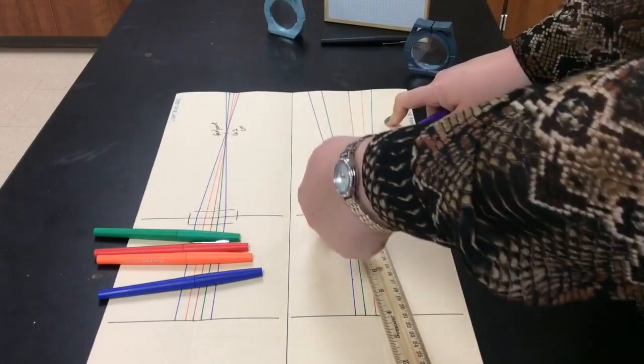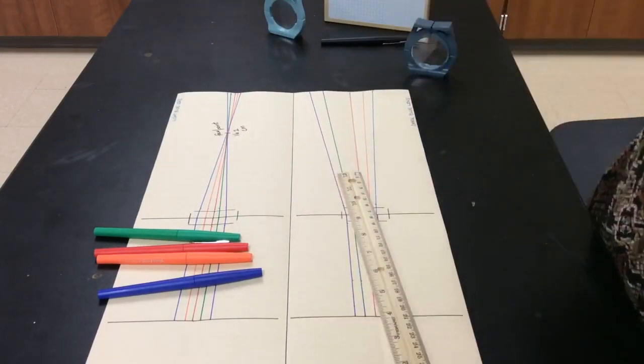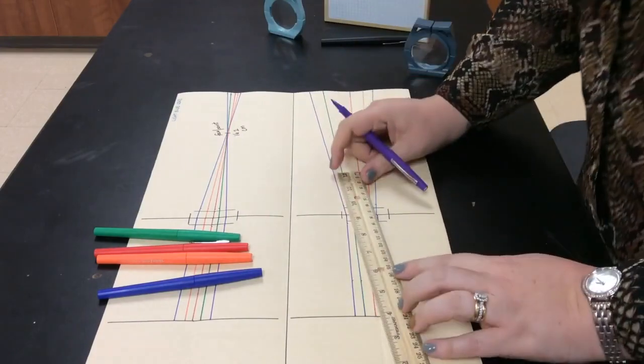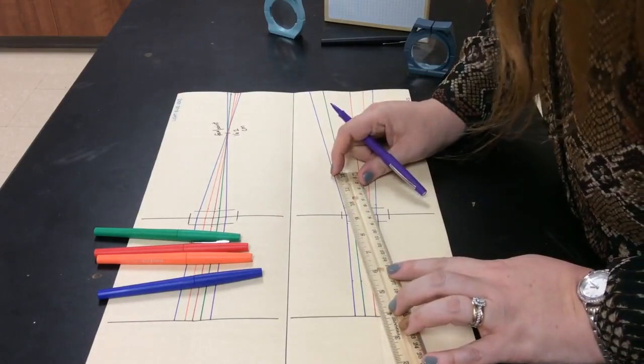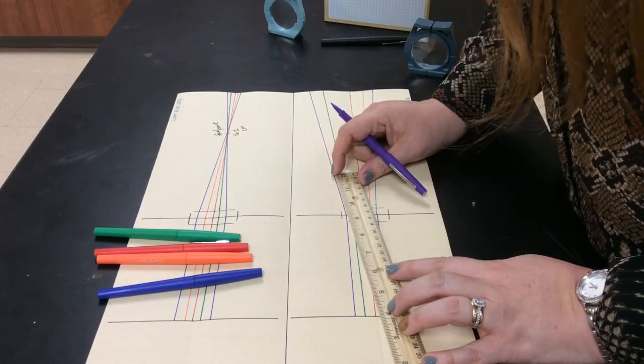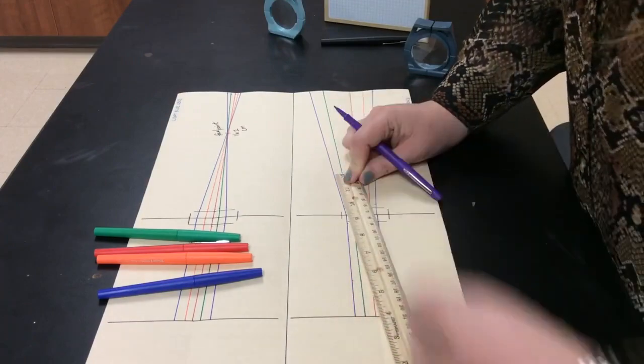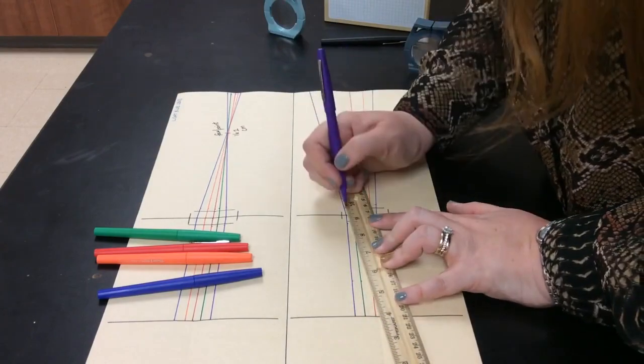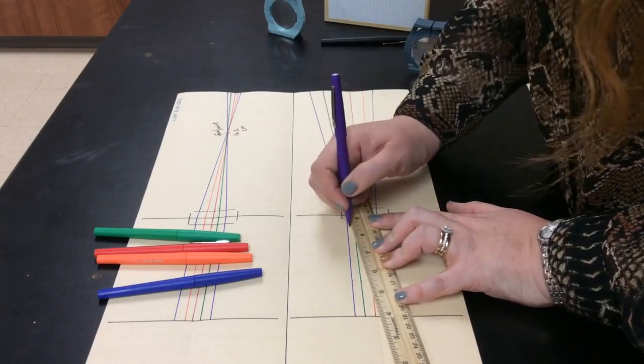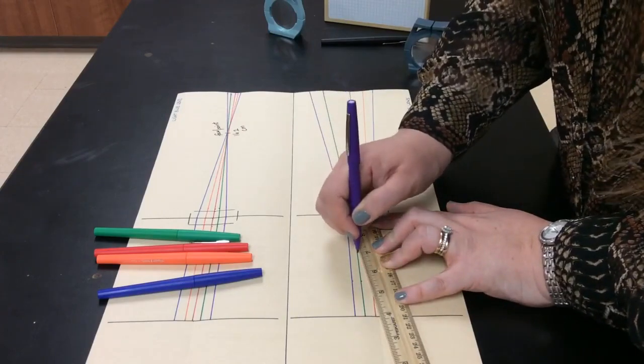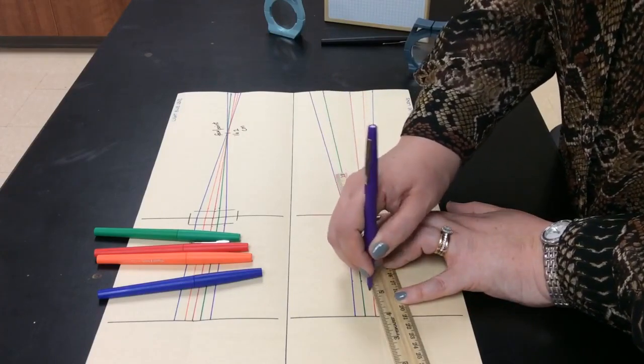I'm going to use my ruler and I'm going to actually trace each one of these rays back behind the lens. I'm going to make them dotted lines just so that they're a little bit easier to see the difference between my five incident rays and the ones that I'm tracing back.